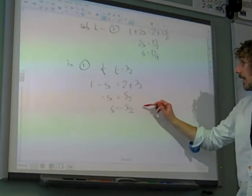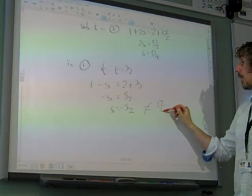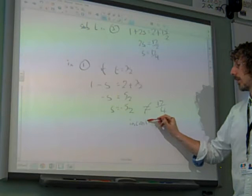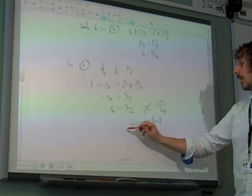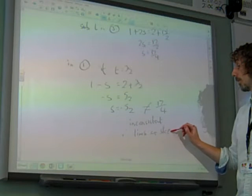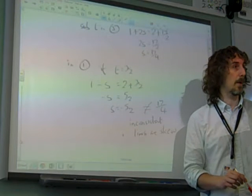Which is not the same as the value of S that we got from the other pair of equations. Not equal to 17 over 4. Inconsistent. Therefore the lines are skewed. Okay? That's right.